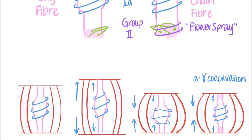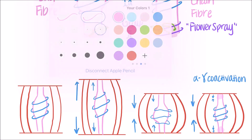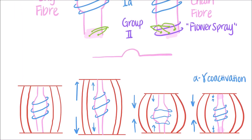This might be difficult to understand at first, so let's take a closer look. Here's a single nuclear bag fiber by itself. I've highlighted the contractile ends. When these ends contract, you can see how this simultaneously pulls the middle non-contractile region outwards. This keeps the sensory innervations from going slack, which allows you to keep receiving information about small extensions and contractions while your muscle is contracted.